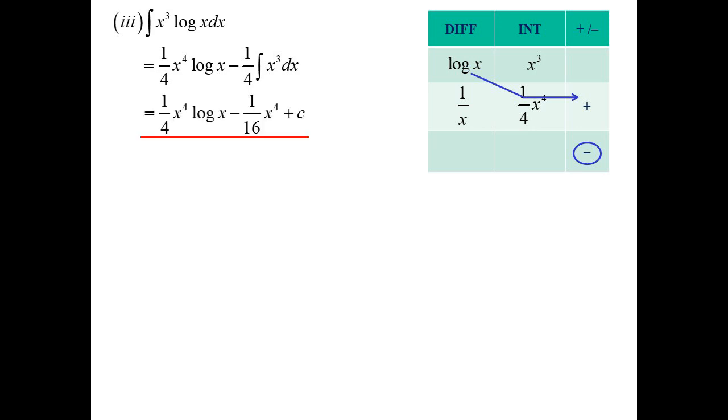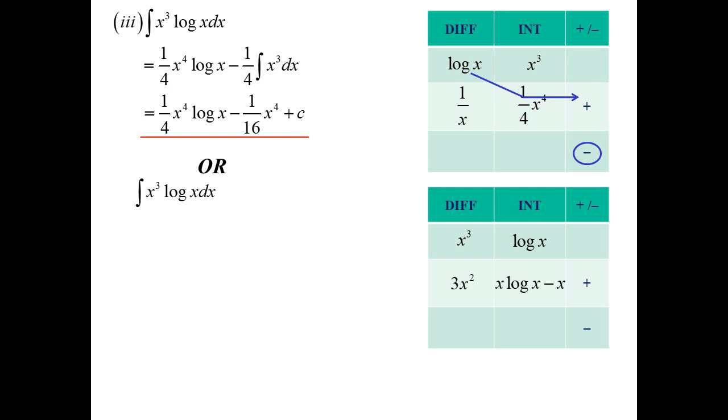Of course another way I could have done it. If for some reason I wanted to swap those around. I suppose I could have done it this way. Because we do know how to integrate log X. It's X log X minus X. I could do it that way. But I'll stop there because I end up with a multiple of what I started with. Because if you multiply these together, look what happens. I get 3X cubed, which is a multiple of what I was doing. And the other bit I can integrate. Not a problem.